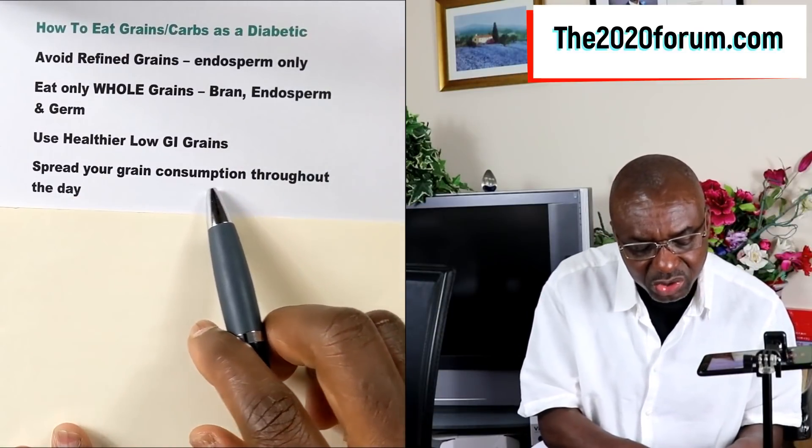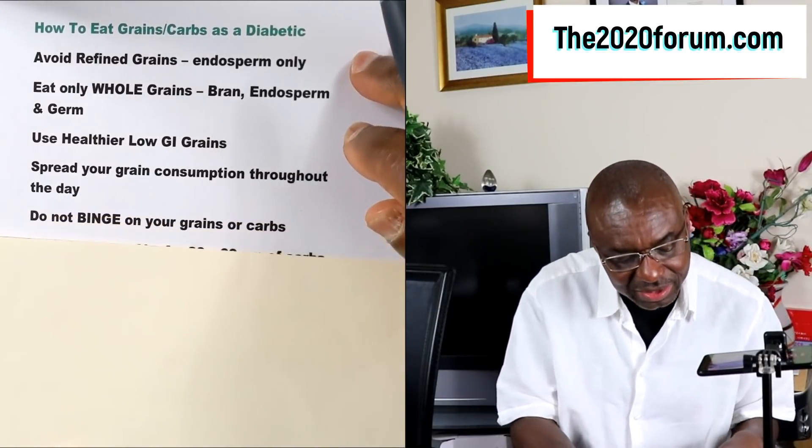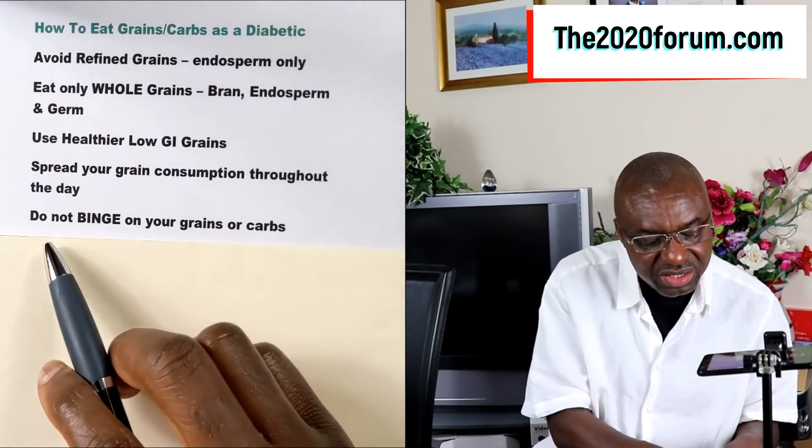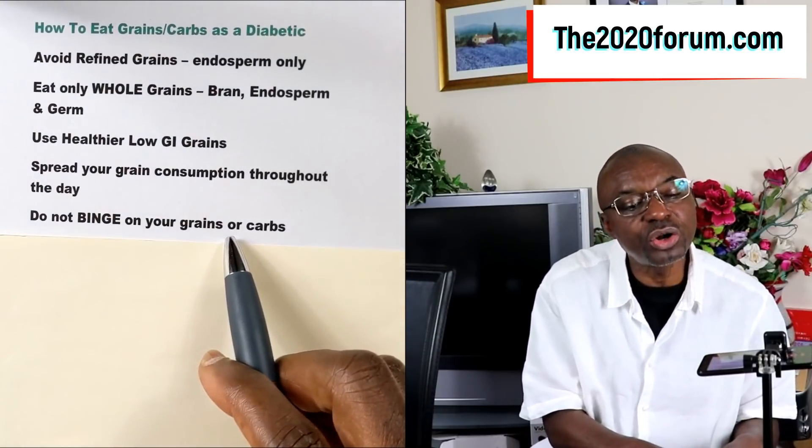Tip number four: you want to spread your grain consumption throughout the day. That dovetails into tip number five, which is that you do not want to binge on your grains or carbs. This relates to glycemic load — you want to share the glycemic load throughout the day rather than loading it all into one meal, because lots of sugar will be absorbed and that will be too much for your liver, leading to very high sugar levels.